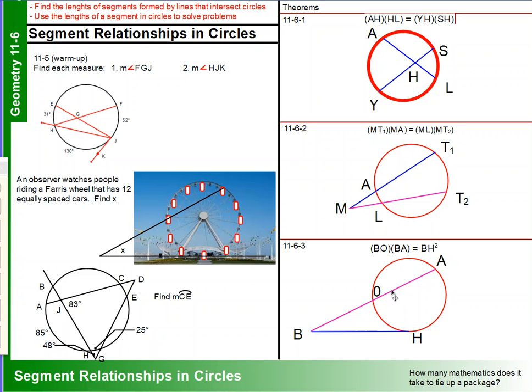And the secant-tangent theorem is very similar to the secant-secant theorem. We're going to multiply BA, the entire length of that secant, times BO, just the exterior of that secant. And when you multiply those together, you will get BH squared, multiply it times itself. So, those are the theorems that we're going to be working with, and let's take a look at some examples.